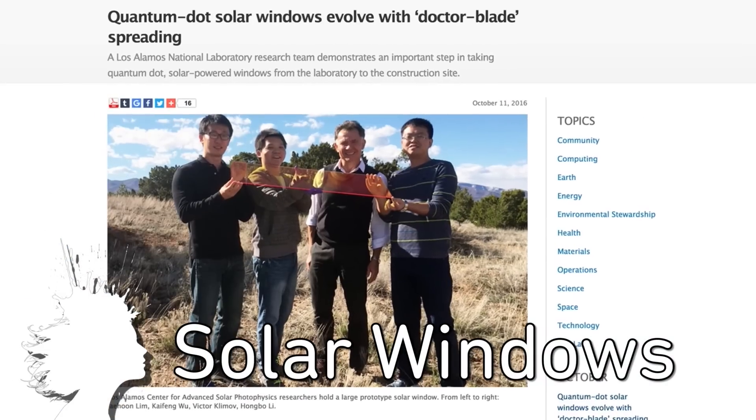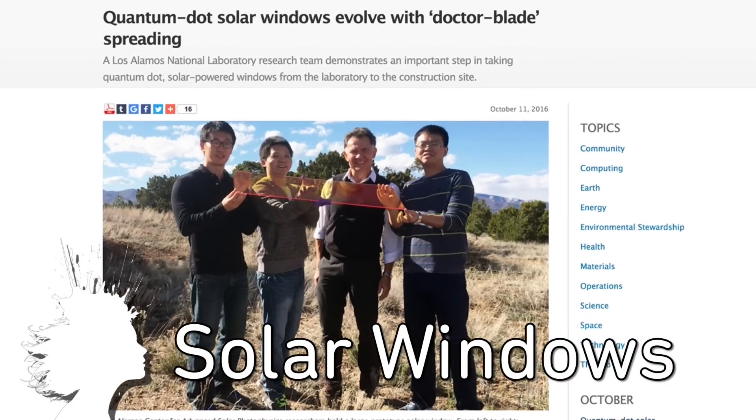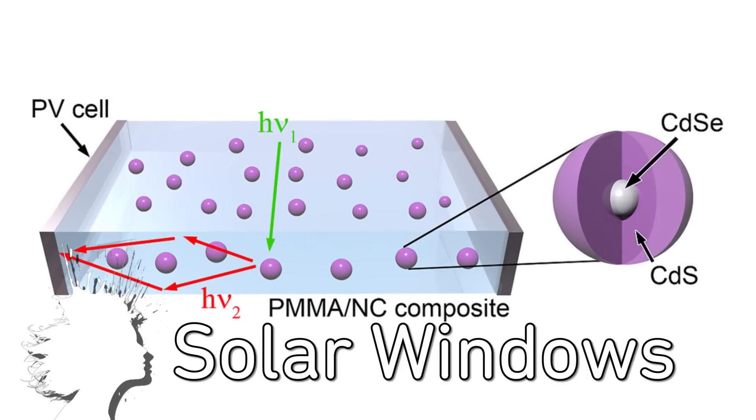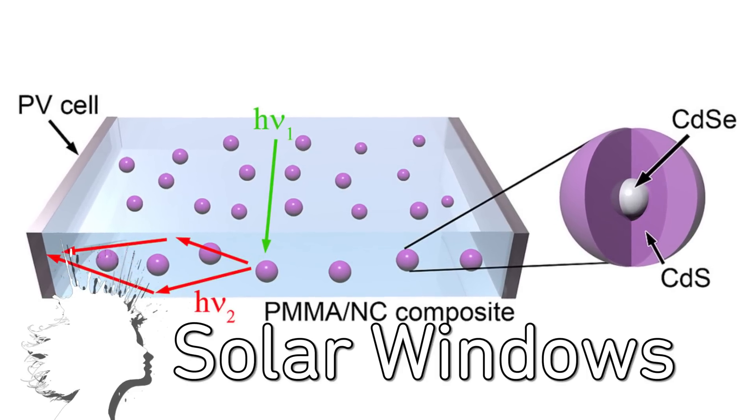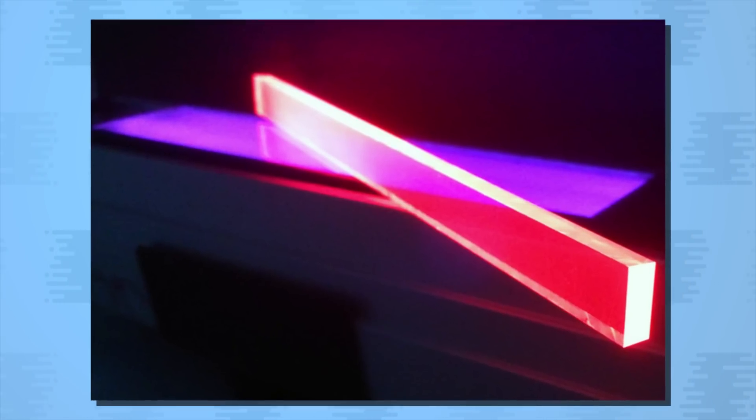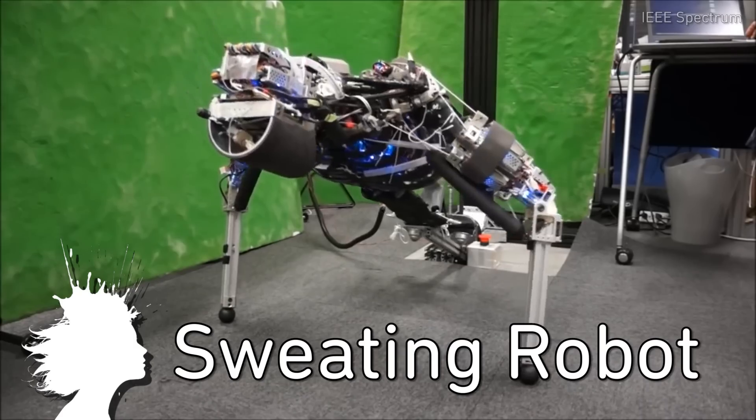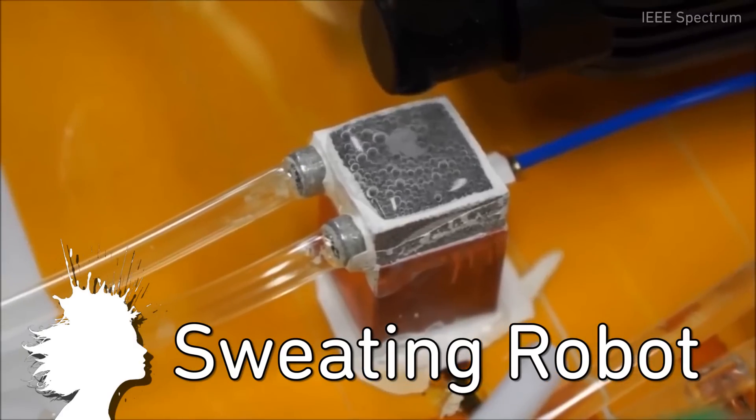A new thin film of quantum dots covers glass and transforms windows into solar panels. The dots have a lifespan of 14 years and right now they're trying to raise their energy conversion efficiency from 1.9% to a more practical 6%. And Kangoro is a bio-humanoid robot from the University of Tokyo that cools itself by sweating.